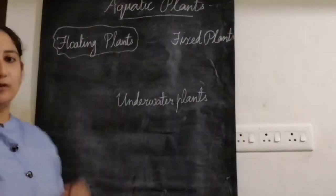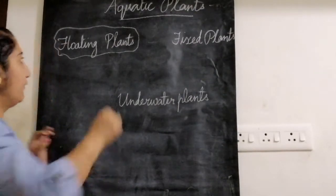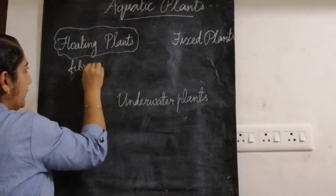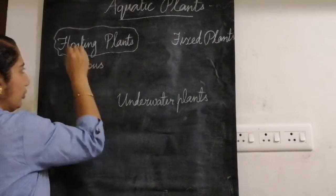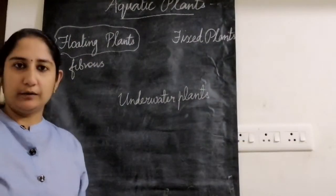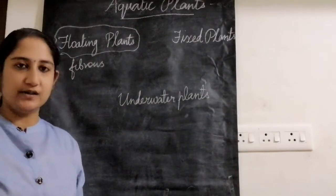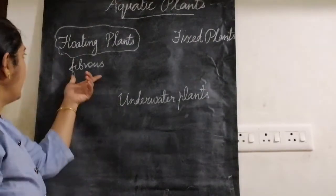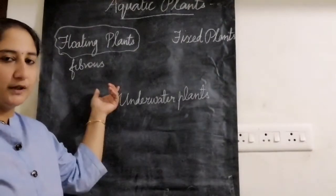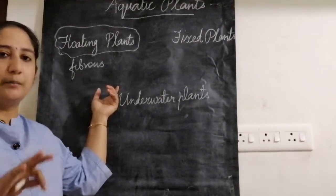When you take floating plants, the first thing is about their roots. They have fibrous roots. These roots are not fixed to the bottom of the water — they just float under the surface of water.